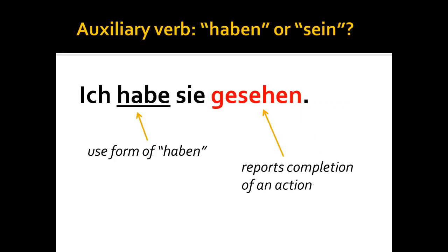Everything else generally uses the auxiliary verb 'haben.' For example, 'Ich habe sie gesehen' — 'I have seen her.' There is no motion involved and no change of condition involved. 'Gesehen,' the past participle of 'sehen' — to see — is simply reporting on the action of seeing this person. Since there's no motion or change of condition, I use the auxiliary verb 'haben.'